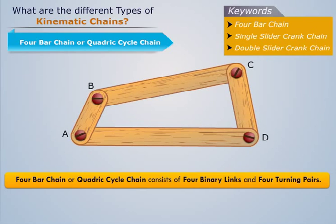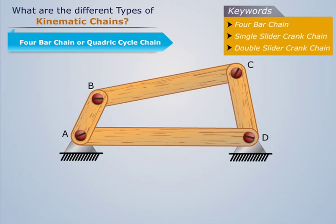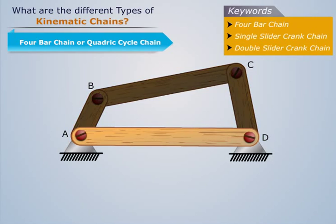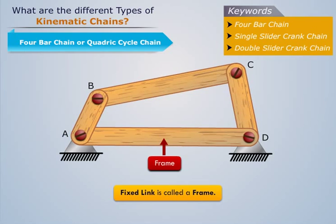Consider a four bar chain A, B, C, D. If we fix link AD, then this link remains motionless and supports the mechanism. Such a fixed link is called a frame.